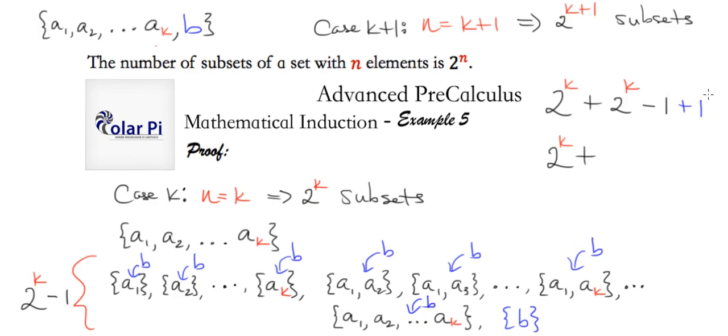And therefore, this set with k plus one elements has this from the subsets of that amount. And then plus this, subsets of this with b thrown in them. And then plus b. And therefore, 2 to the k. Plus the minus one plus one there is zero. So plus 2 to the k. This is 2, 2 to the k's. So 2 times 2 to the k, right? And then this is 2 to the first. But wait. That is, as desired, 2 to the k plus one. Yeah?